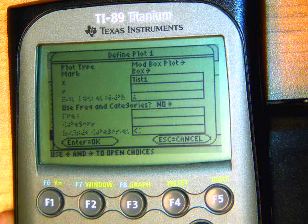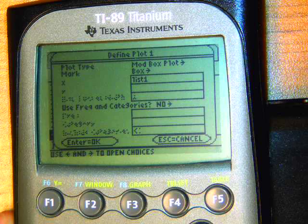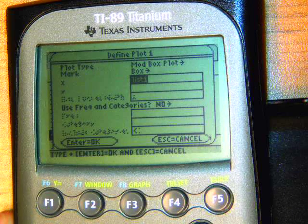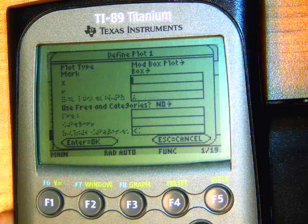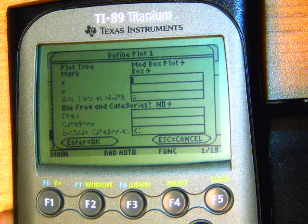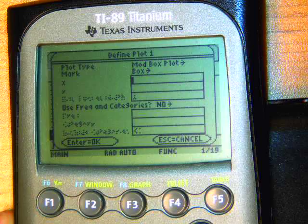Under mark, you can use any of the marks but box seems to show up the best. Now you might not have a list here. So if there's no list name here, if you have a blank spot, you want to do var link. So second, var link. Var link is right above the minus key.